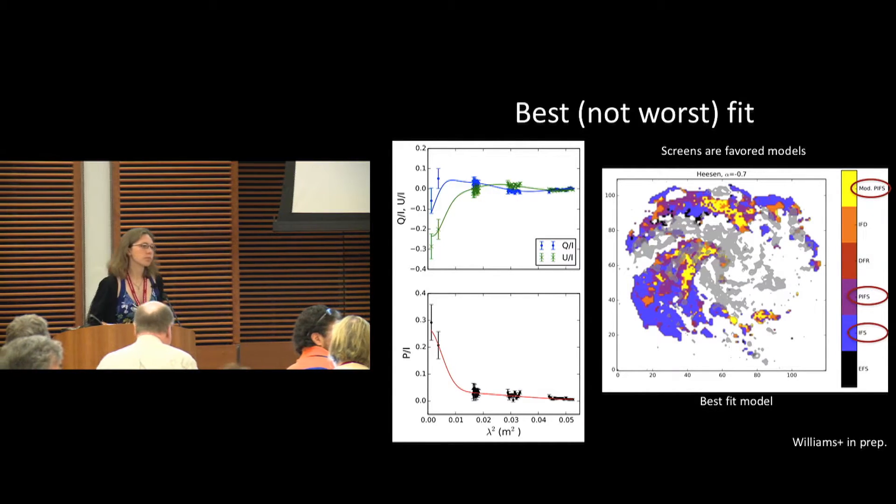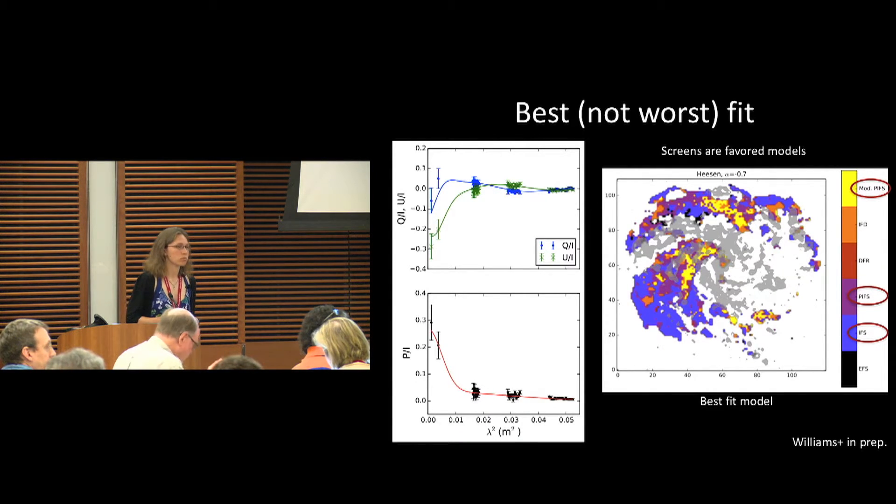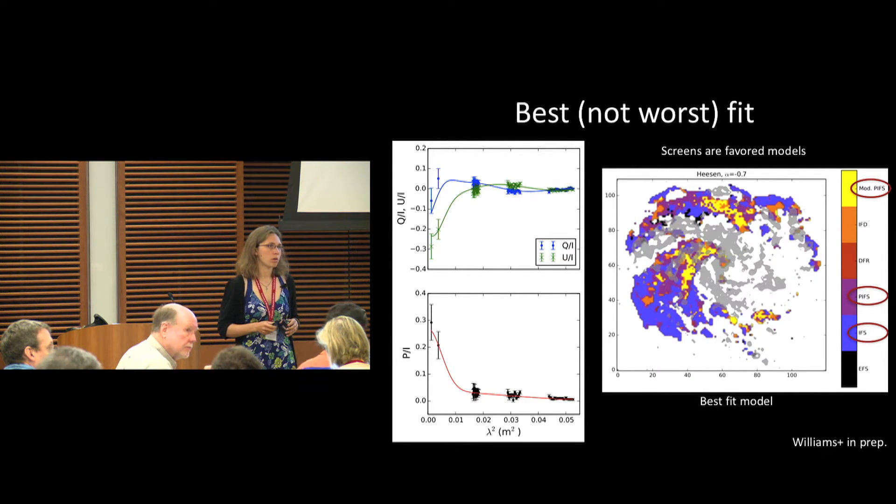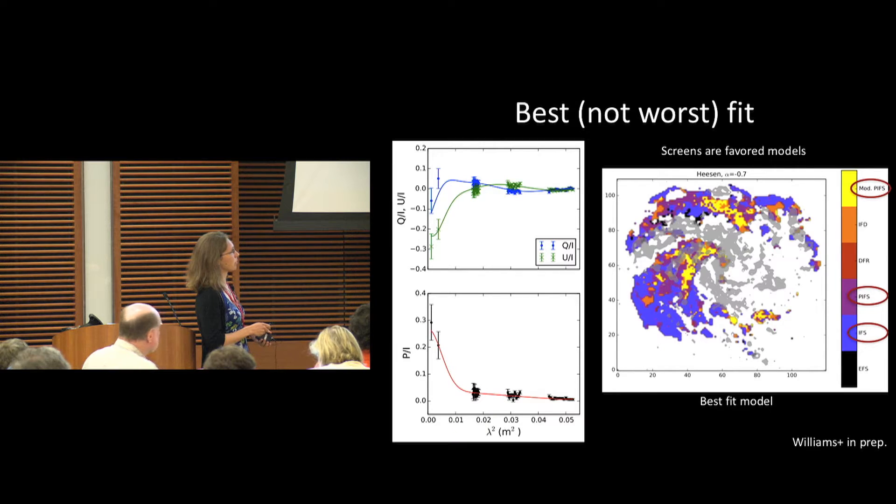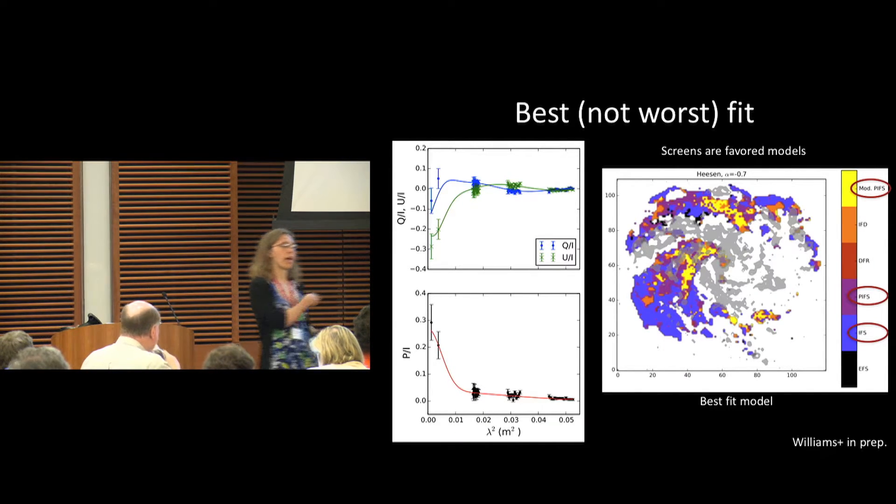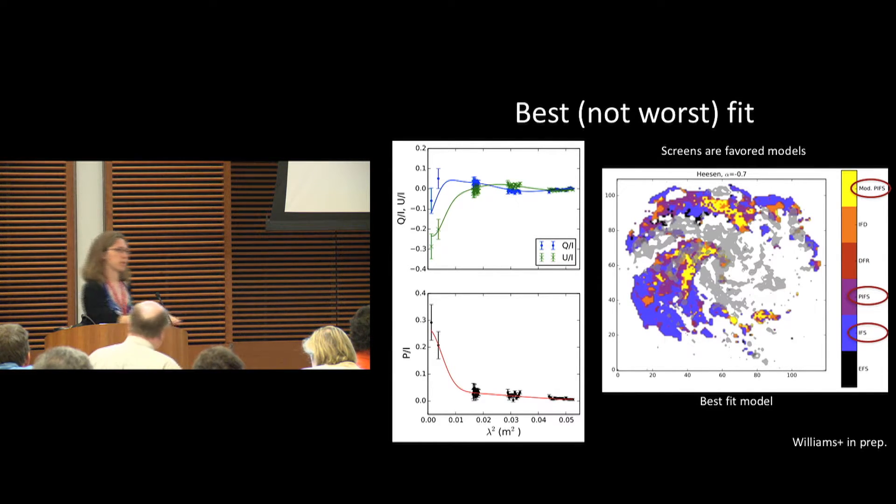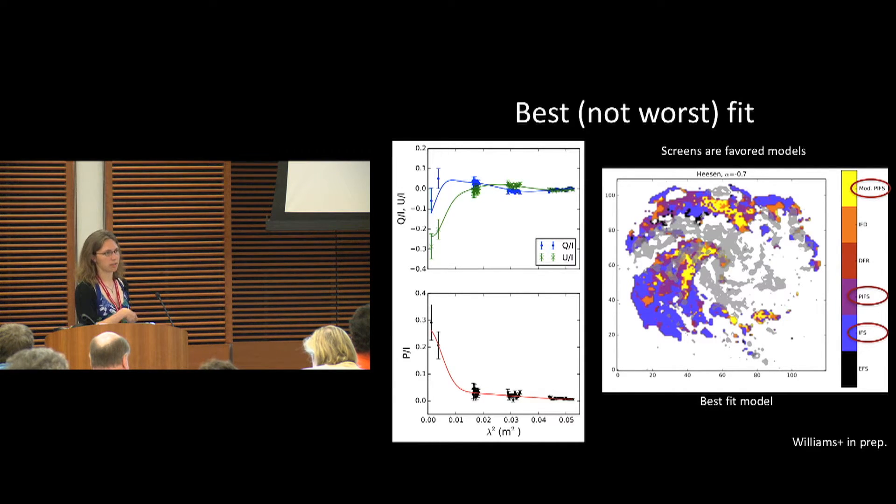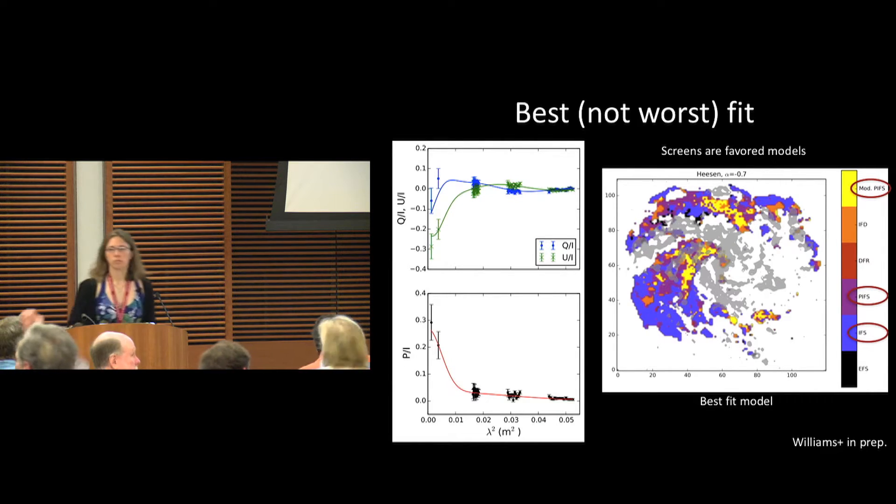I was wondering if you've checked the models like the Tribble model, which predict a much more shallow fall off of polarized intensity than the Burn model does, particularly when P over I is less than about a half. This modified PIFS is actually the Jamie Farnes model that uses a turbulent medium at the source of the emission, and that also can produce a more gradual fall off. We've included one of their models similar to that.